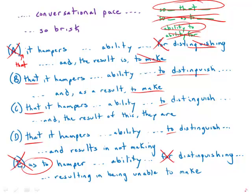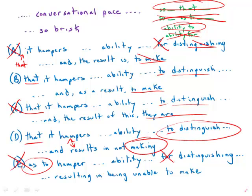To distinguish, and as a result of this they are unable to make sounds, that's not a proper parallel. To distinguish results in not making, that one is particularly strange because it puts hampers and results in parallel, which is not the intended meaning of the sentence at all. That drastically changes the meaning to something quite illogical. It's really these two that should be in parallel, and they're not, so D is out also.